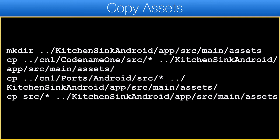You might be thinking: why copy? We included the source of the kitchen sink — why not do the same for the implementation? The main problem is overridden files. Codename One redefines the Codename One thread class in the Android implementation and relies on that redefinition taking priority. This is also important because you might want to delete some files such as Facebook support, so copying makes more sense in this special case.